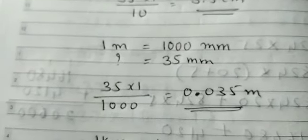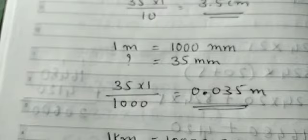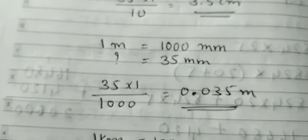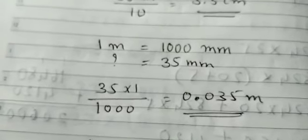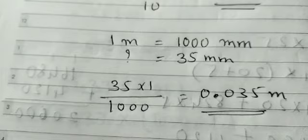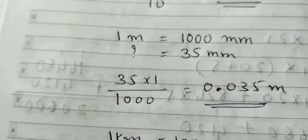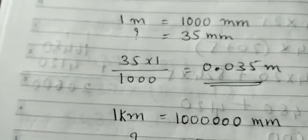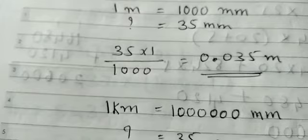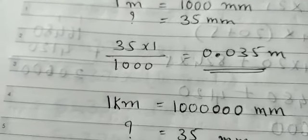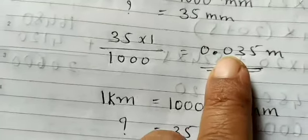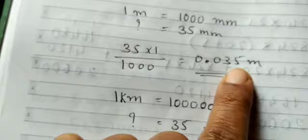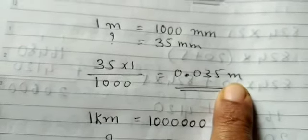One meter equals 1000 millimeter, because 1 meter = 100 centimeter and 1 centimeter = 10 millimeter, so 10 × 100 = 1000. So 35 divided by 1000: it's a two-digit number but we have three zeros in the denominator, so there should be three decimal places. To fill the missing place, put zero. The answer is 0.035 meter.